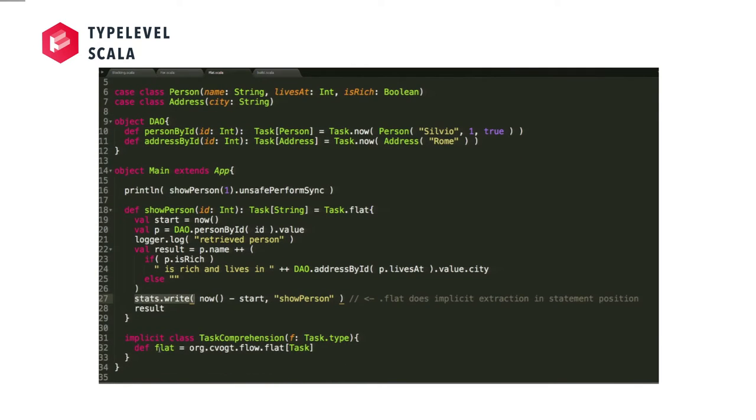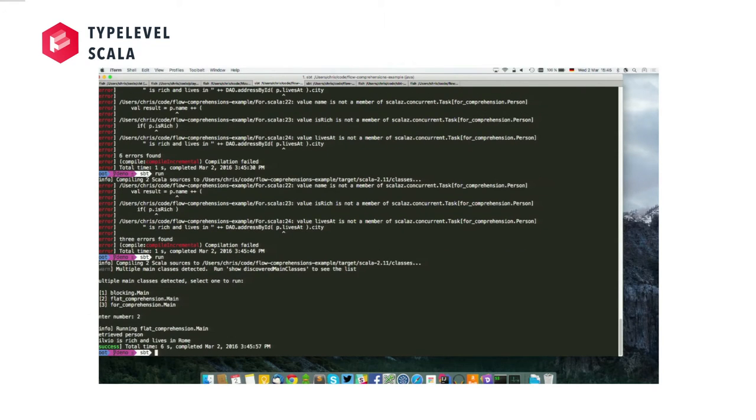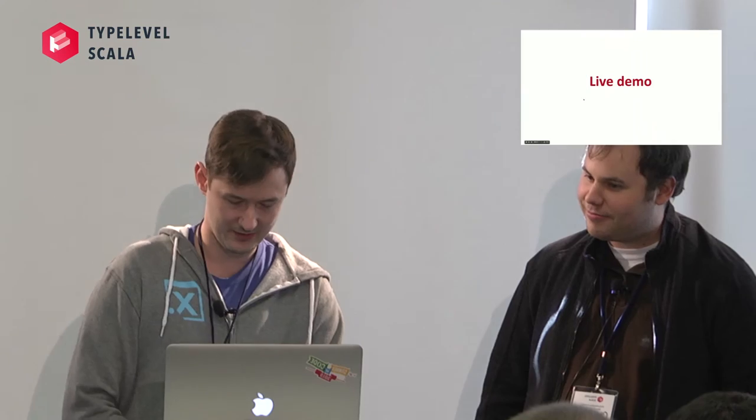And that's it. And the way you get flat onto your custom monad is by just doing this way where you just make an extension method on the companion object of your monad and say, hey, there's flat define, it's this. Right. So, it works. Let's say the flat comprehension. There we go. All right. And I'm handing back to Chris.